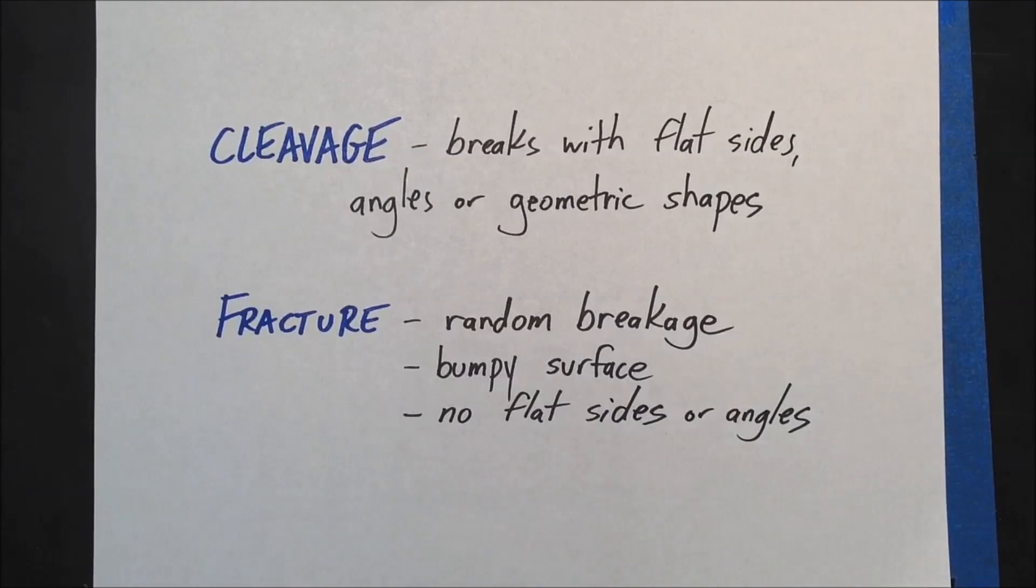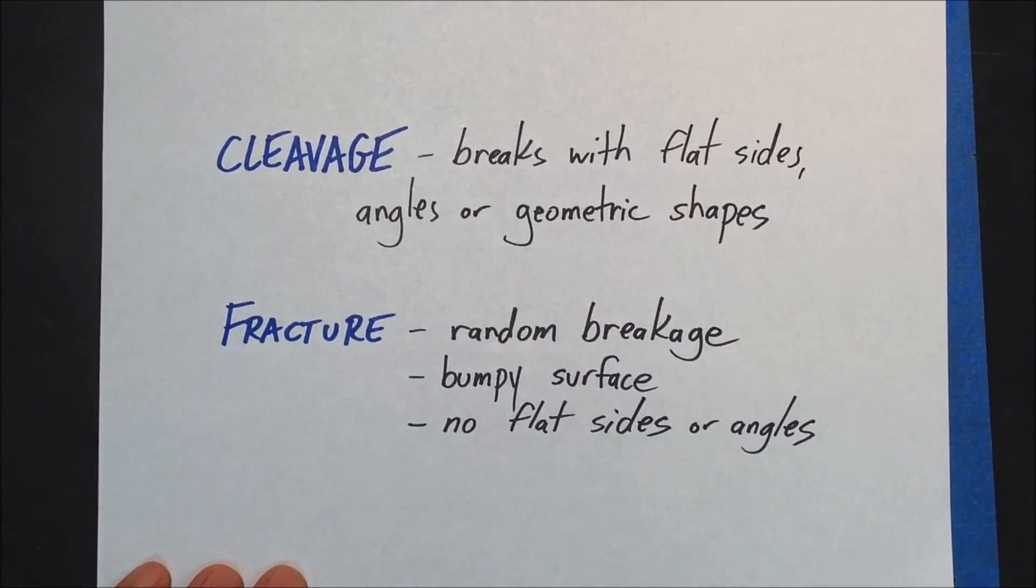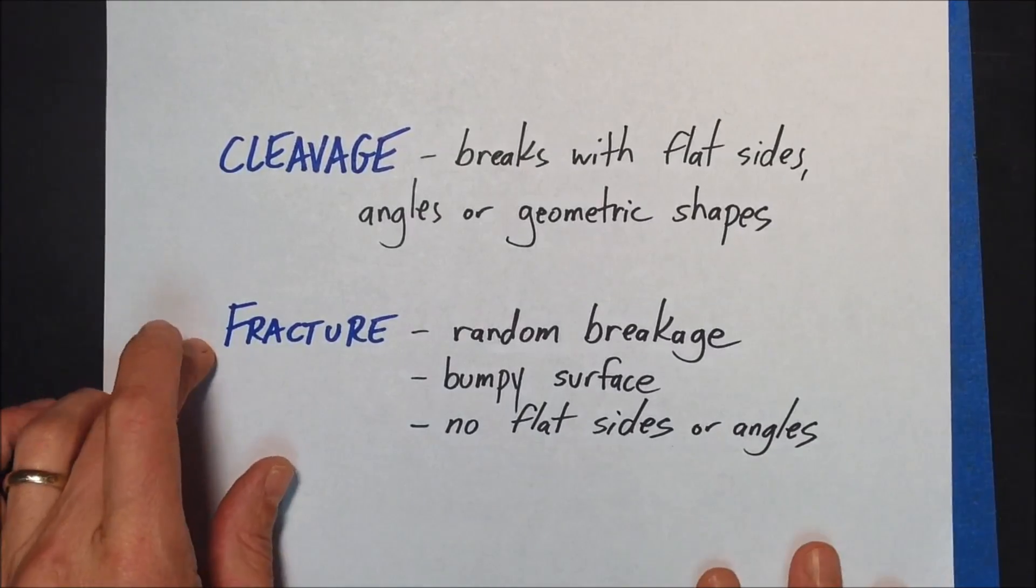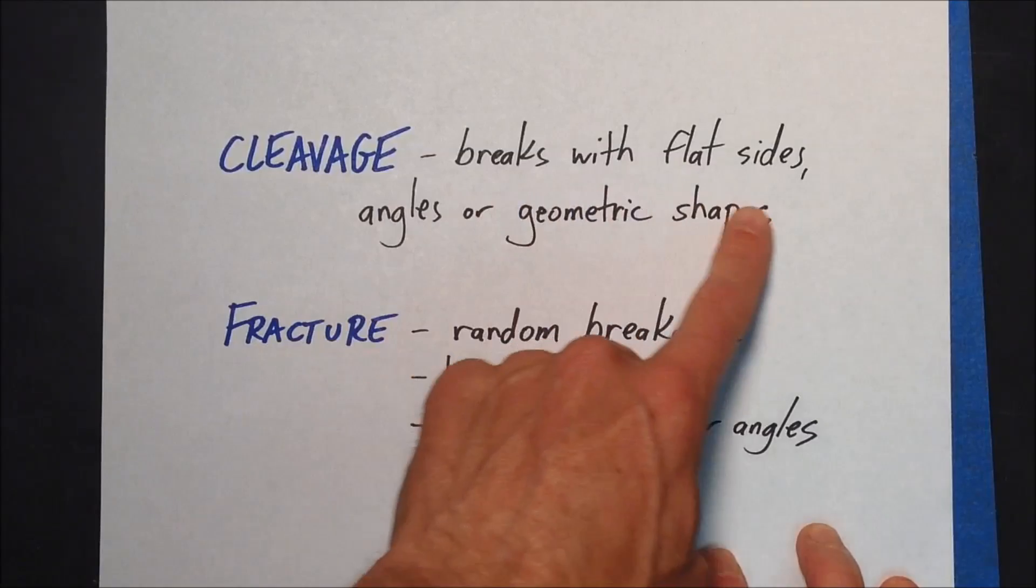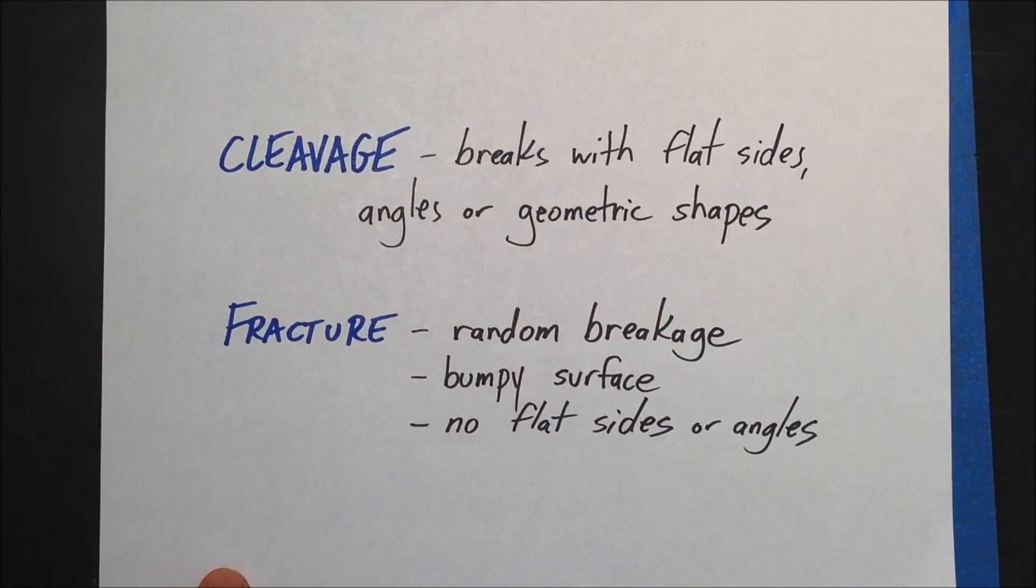We are going to talk about minerals today and really how they break. Cleavage or fracture can be quite tricky. The video is not the greatest way to do this, it's best with real hand samples but this is what we have. We're looking at broken pieces of minerals that have to be broken and it's either going to break with cleavage or fracture. Cleavage: what you're looking for is if the mineral breaks with any flat sides or angles or geometric shapes, then it has cleavage. Fracture: if the surface has random breakage or bumpy surfaces and no flat sides or angles. So let's look at some examples of it now.